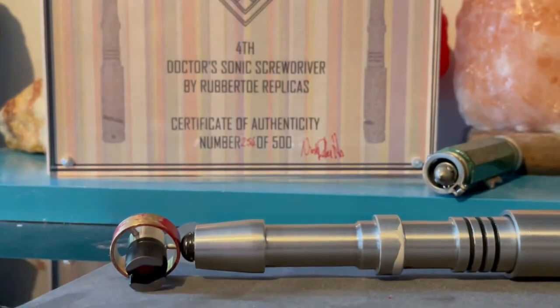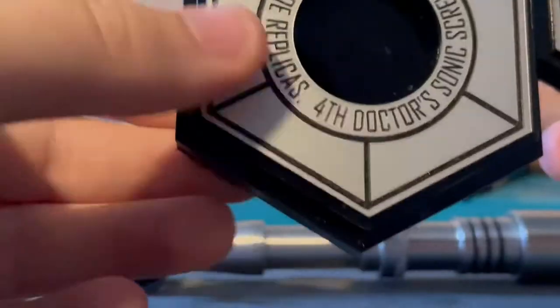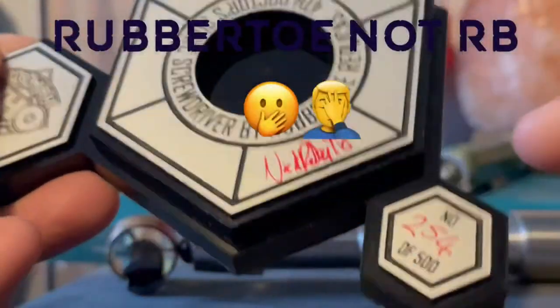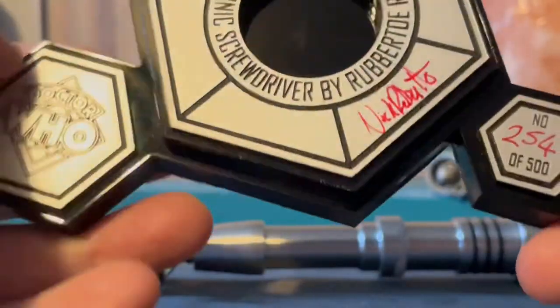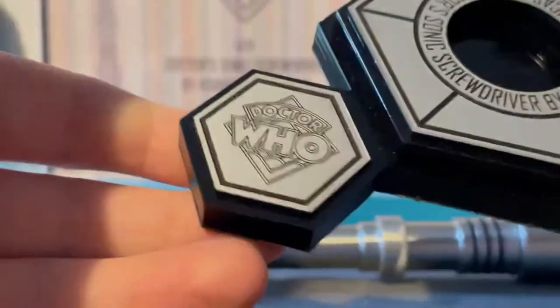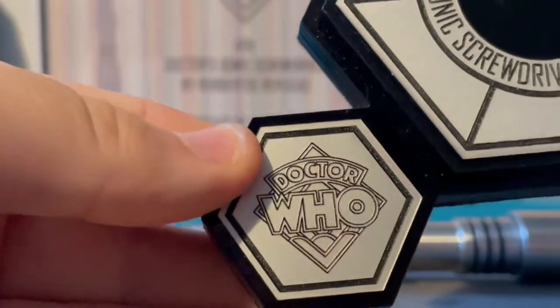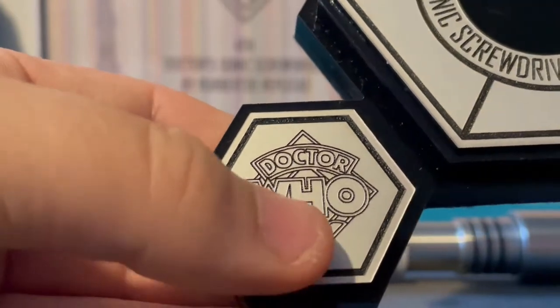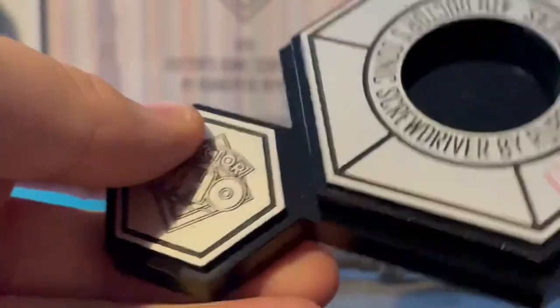This is the stand that comes in two parts. I've took it apart for the purpose of the video. So here we go. We've got the Fourth Doctor Sonic Screwdriver by RB Replicas, signed by Nick, numbered by him as well, although they should have really put 260 there.